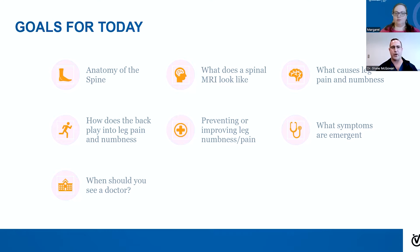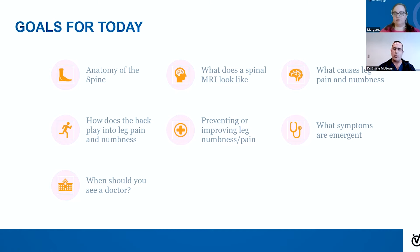We have a game plan moving forward. We're going to look at the anatomy of the spine — how it works, what it looks like, what it's responsible for. Then we'll go through what a normal spine MRI looks like, what an abnormal MRI looks like, the causes of pain and numbness in the legs, how the back plays into this, how to prevent it, what symptoms are emergent vs. non-emergent, when to see a doctor, when to stay home, and we'll briefly touch on treatments at the end.